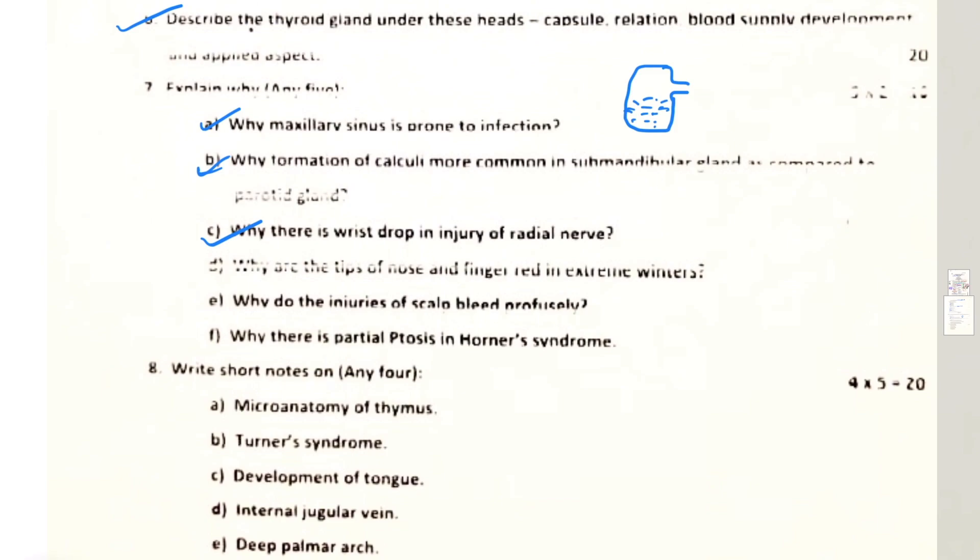Next question: why there is wrist drop in injury of radial nerve? Simply, if there is supracondylar injury of radial nerve, because you know the lateral epicondyle of humerus has common extensor origin from the anterior surface of the lateral epicondyle of humerus. All the extensors, most of the extensors of the wrist, are being innervated by radial nerve. So if there is a supracondylar injury there will be a wrist drop. Why are tips of nose and fingers red in extreme winters?